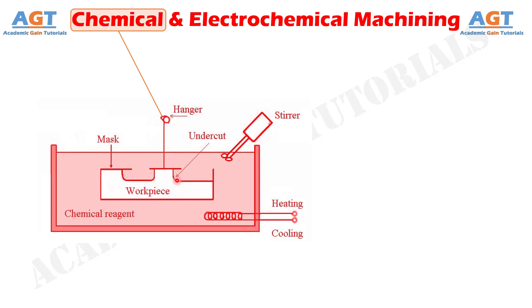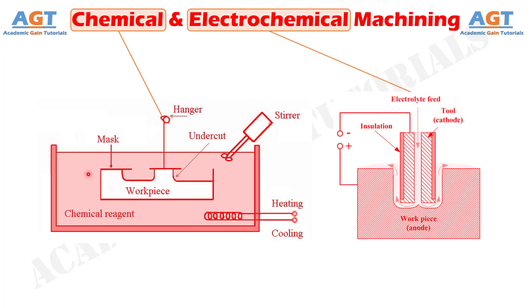No separate cutting tool, shape tool, or similar device is used here. On the other hand, in electrochemical machining, material is removed by ionic dissolution under the assistance of an electrochemical reaction. No corrosive etchant is used here; instead, a suitable electrolyte is employed.